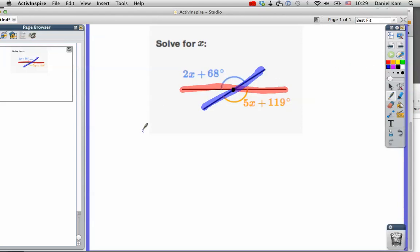So we know that the blue one, that blue angle up there, this blue angle right here, is going to equal this orange angle over here. They're going to be equal. So I'm going to put an equal sign in the middle to remind us that the blue one equals the orange one.